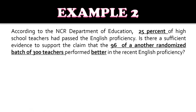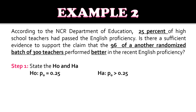Example number two: According to the NCR Department of Education, 25% of high school teachers had passed the English proficiency. Is there sufficient evidence to support the claim that 96 out of another randomized batch of 300 teachers performed better in the recent English proficiency? For step one, the null hypothesis is population proportion equals 0.25, and the alternative hypothesis is population proportion greater than 0.25 — it is greater than because the keyword in the problem is 'better.'